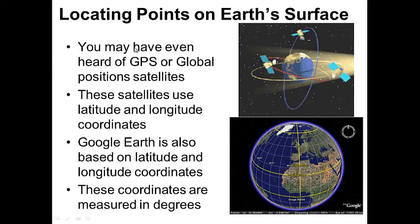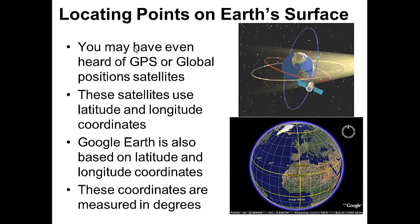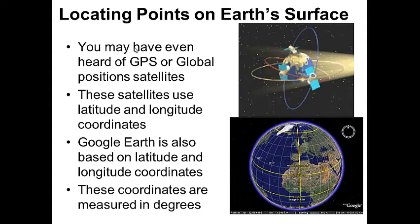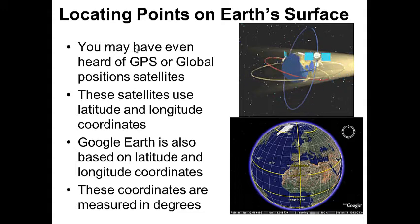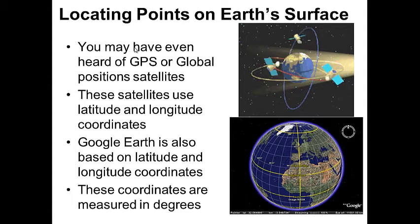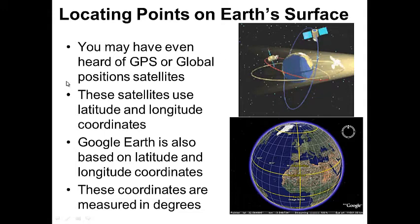You may have even heard of GPS, or Global Positioning Satellites. These satellites operate on latitude and longitude coordinates. Google Earth is also based on latitude and longitude coordinates — in fact, you can type latitude and longitude into the Google search engine and it will take you right to it on Google Maps. These coordinates are measured in degrees, and remember, these are imaginary lines.